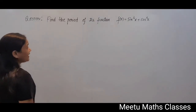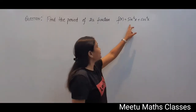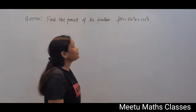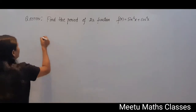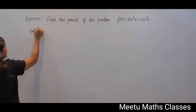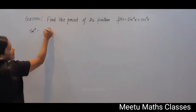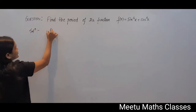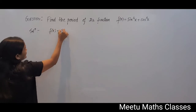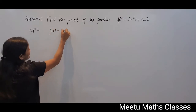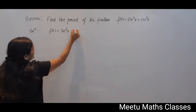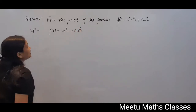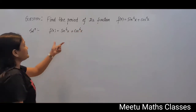To find the period of a function that is the sum of two functions, we are first going to write this function as a single trigonometric function. So we have sin⁴x + cos⁴x, which can be written as (sin²x)² + (cos²x)².